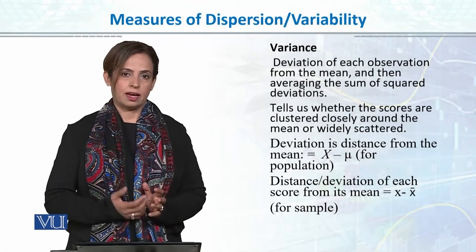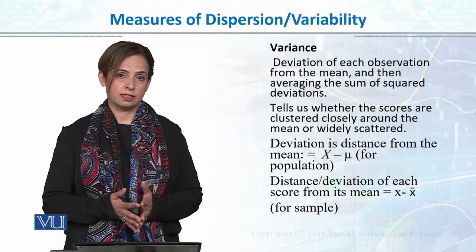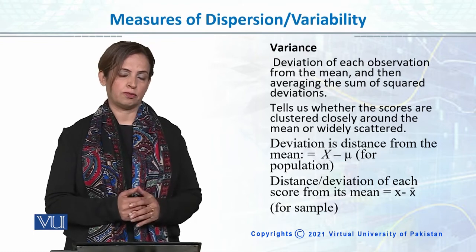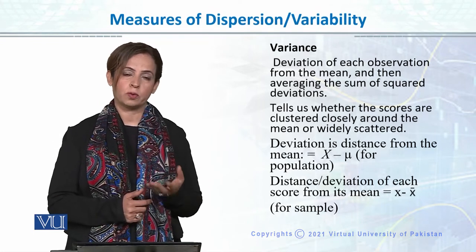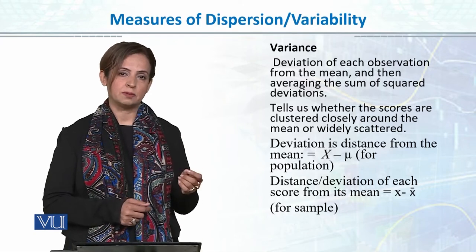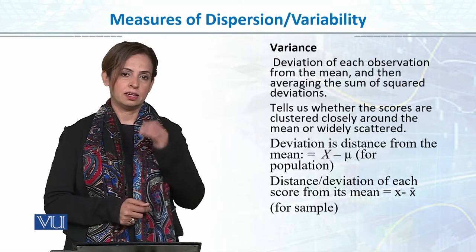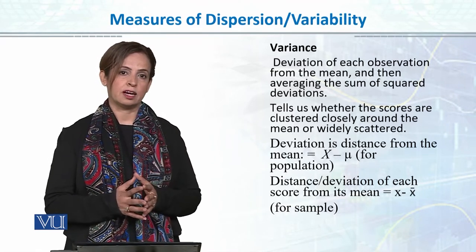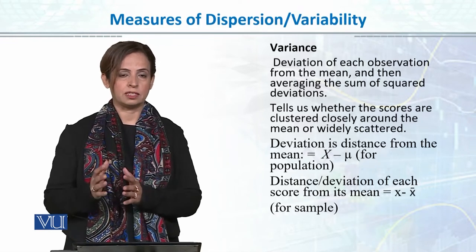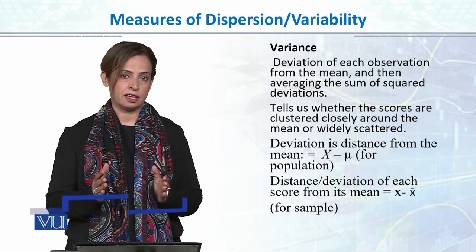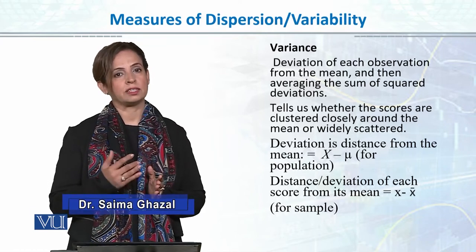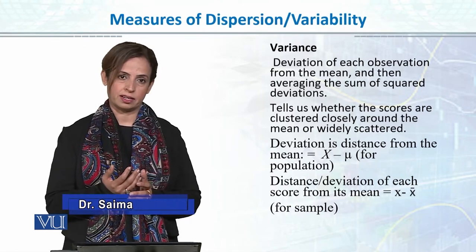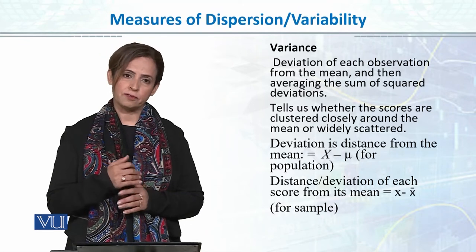Mean deviation has a problem: when we do summation of x minus mean, it becomes zero. So to get rid of the negative signs and the zero summation, why don't we square the values? Because when we square each value, negative signs disappear. Variance is actually a measure of dispersion in which we see each score's deviation from the mean or central point, and since x minus mean sums to zero, we square it.